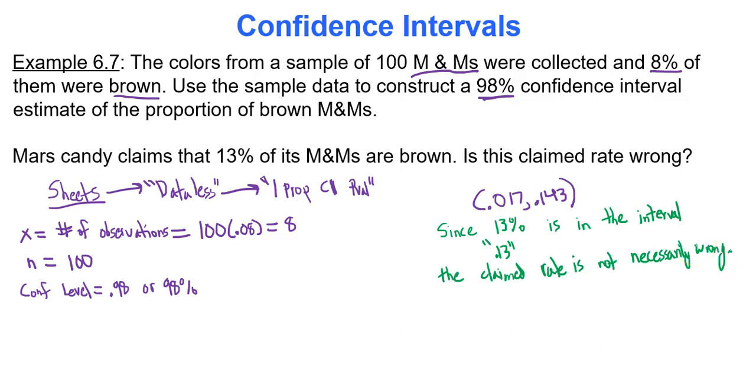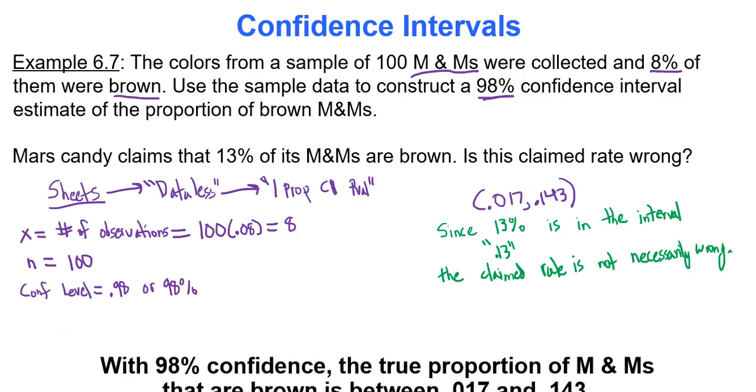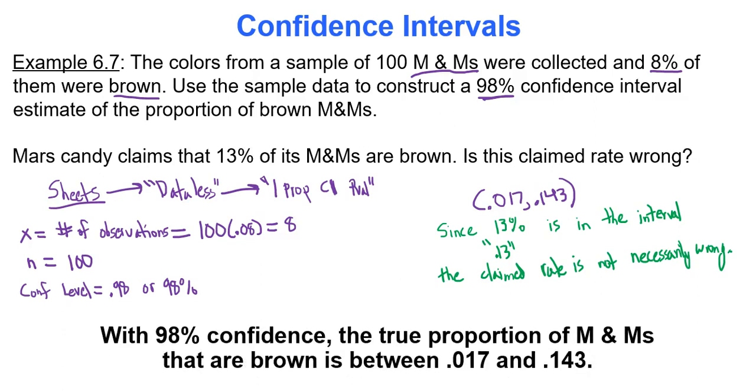The only other thing we need to do here is write out the one sentence interpretation of our confidence interval itself. That interpretation is, with 98% confidence, the true proportion of M&Ms that are brown is between 0.017 and 0.143.